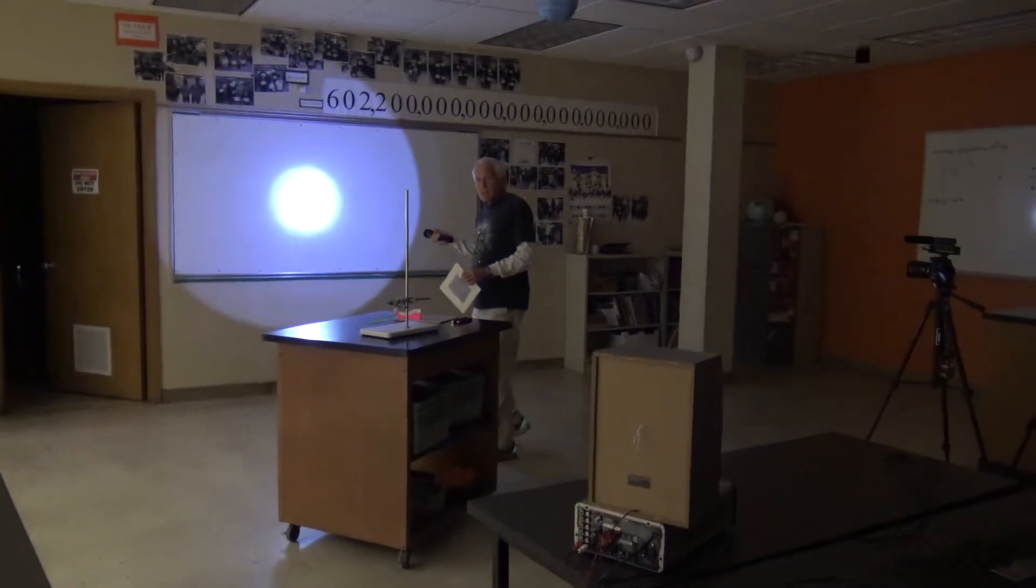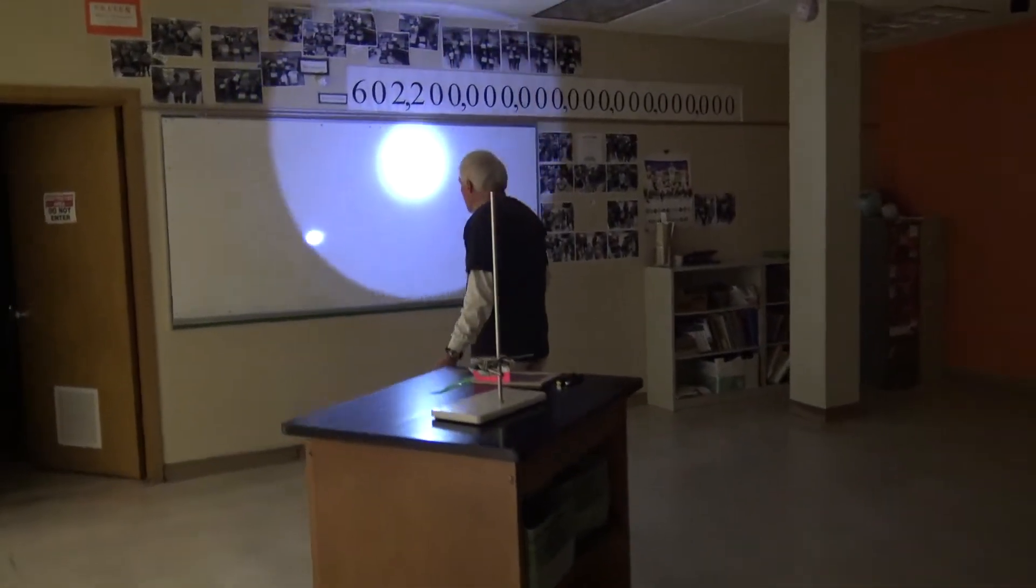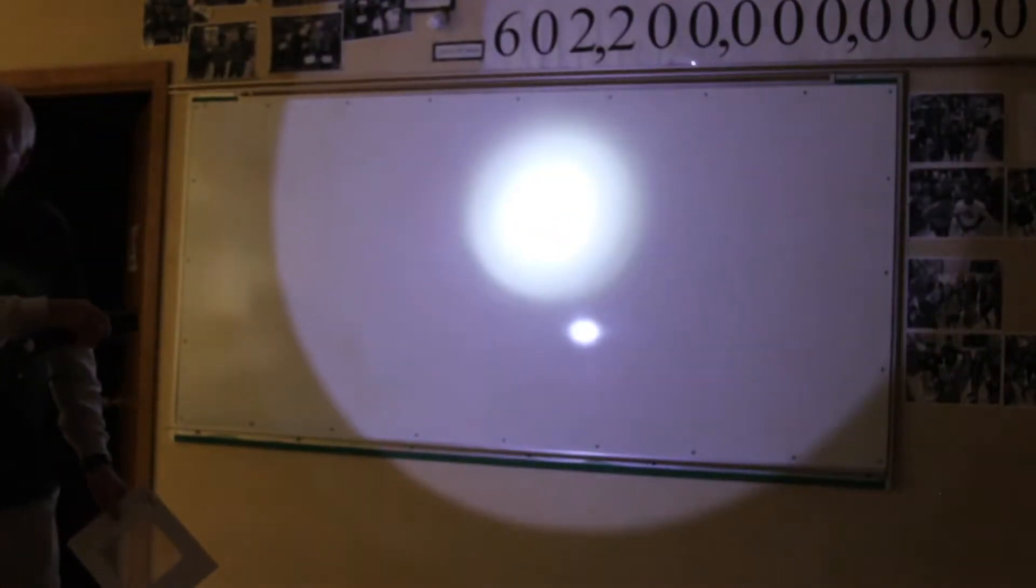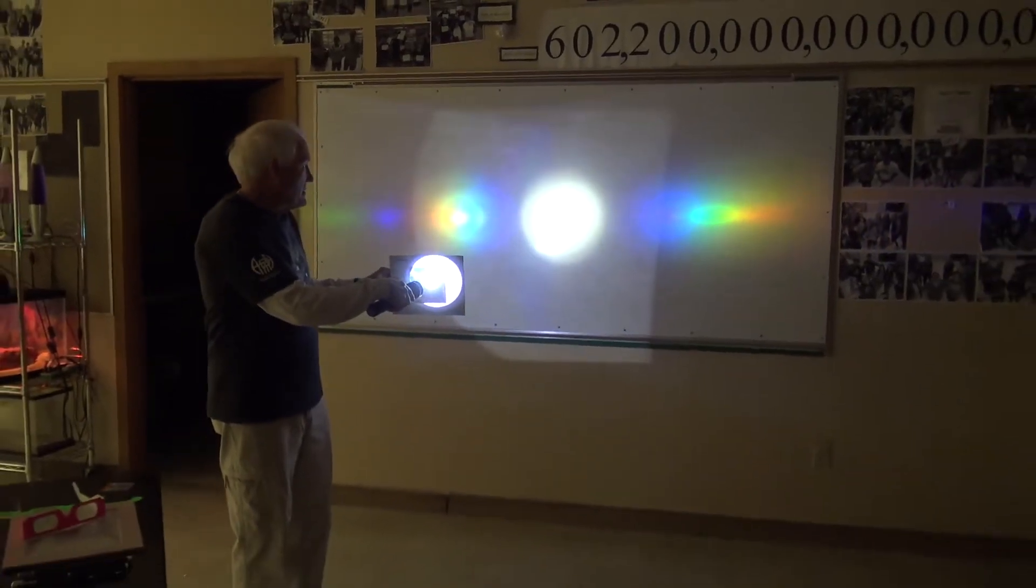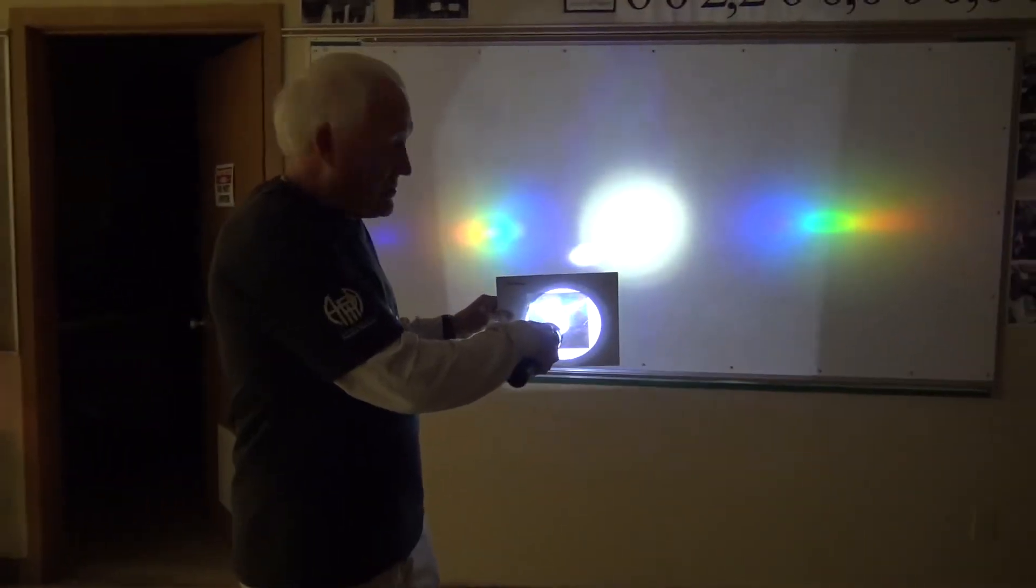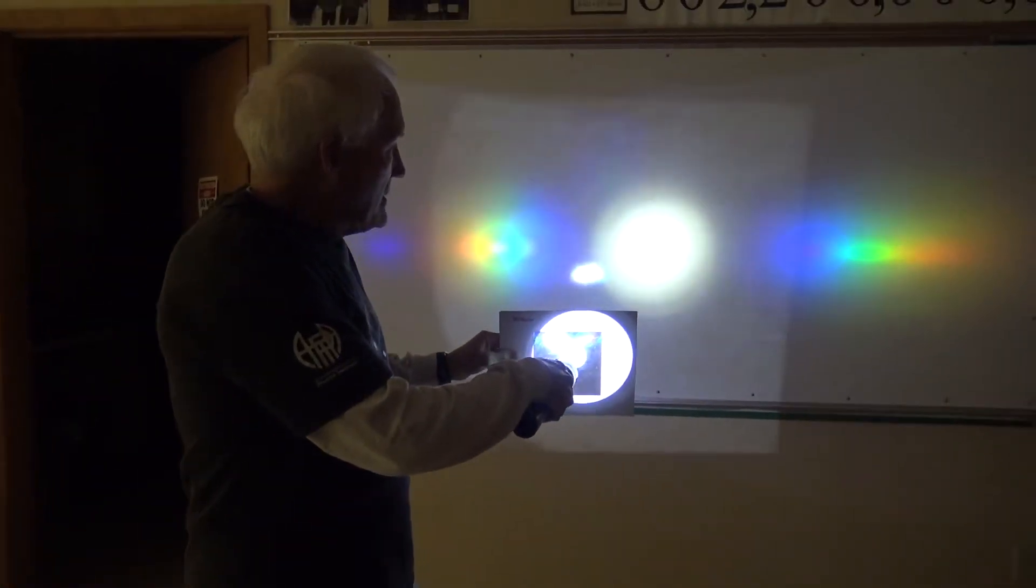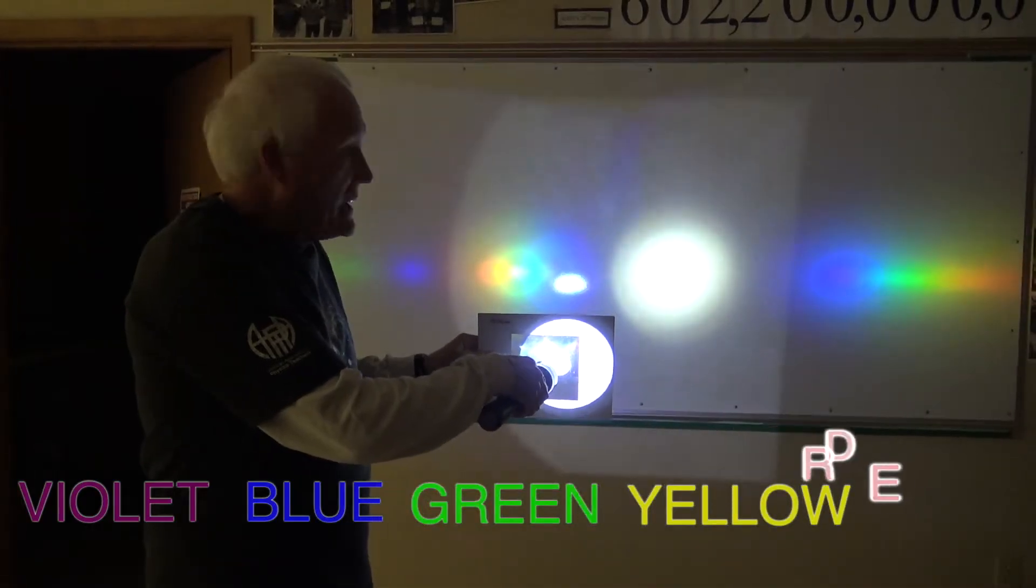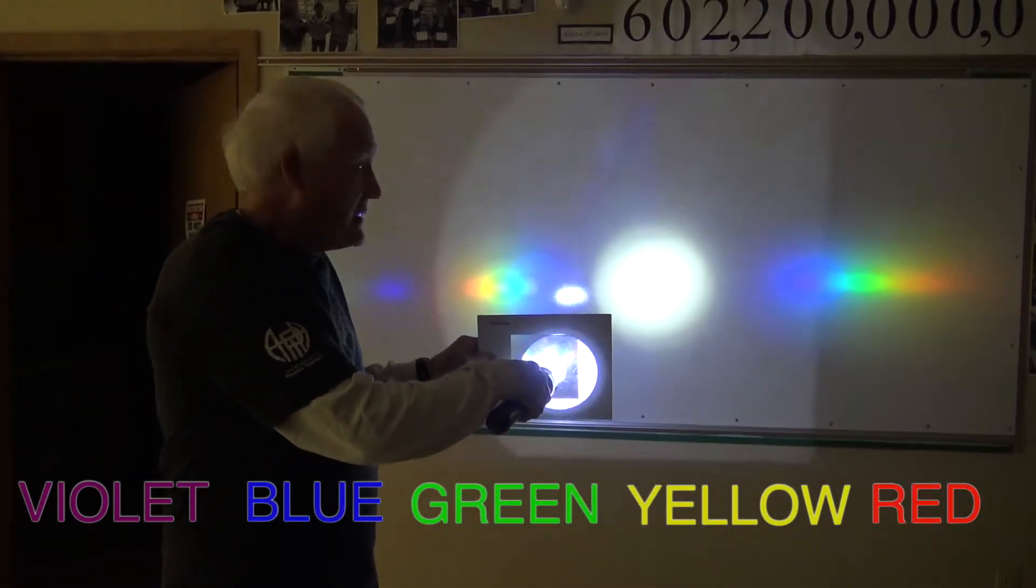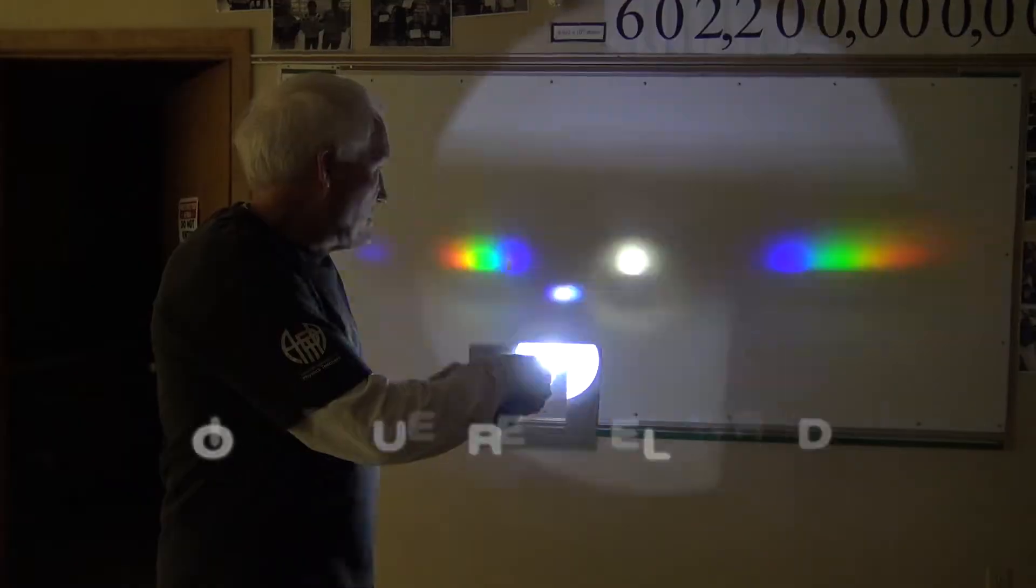When we shine the light through the grating, it's going to separate wavelengths. We see that separation as being different colors. The closest color to the center, to the white light, is violet and then blue and then green and yellow and finally red. The longer wavelengths are separated the most. They're further out.